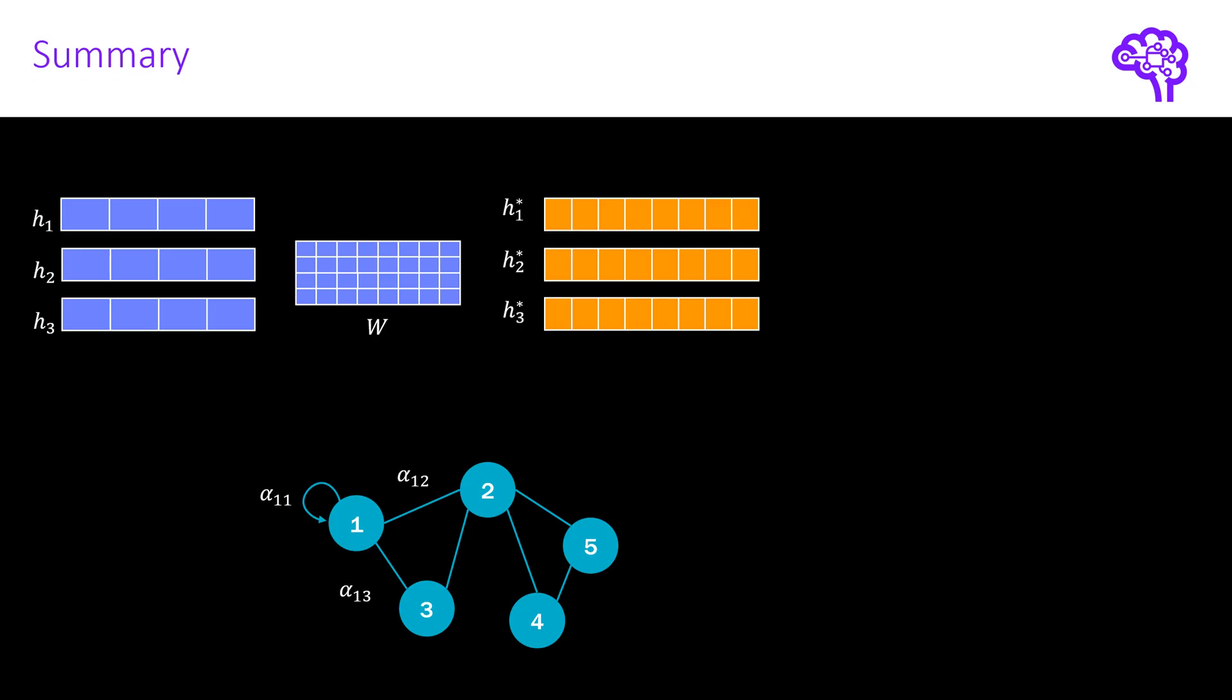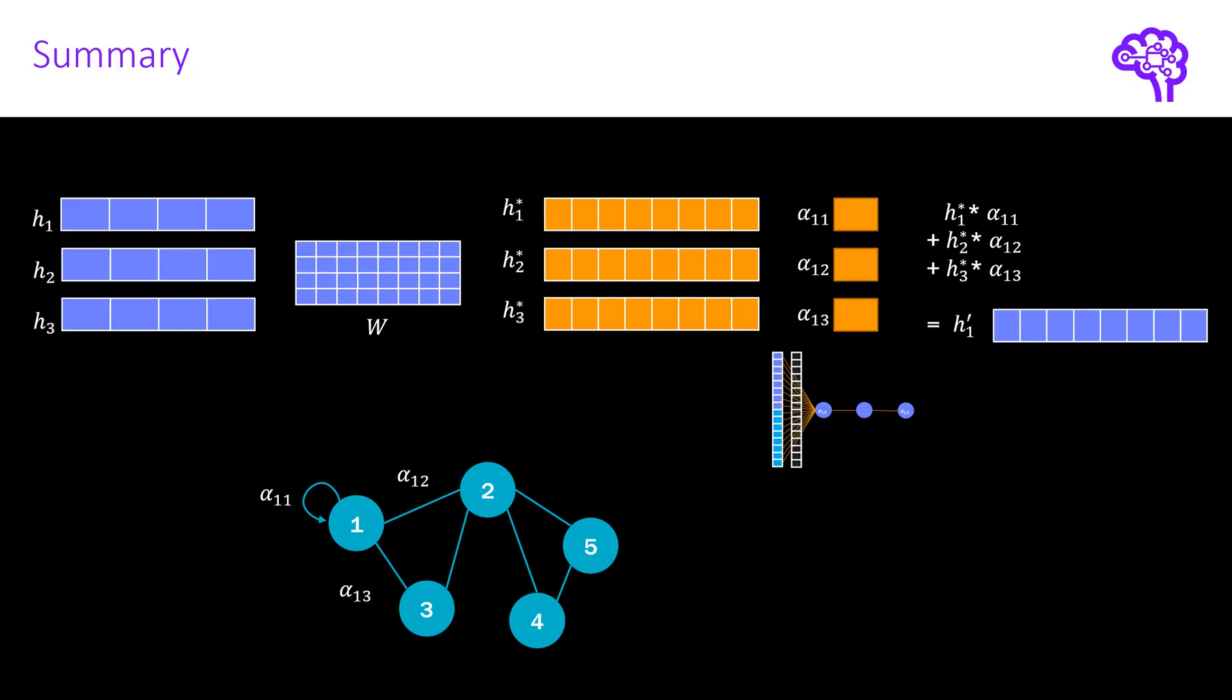What we get out are those intermediate node states which I denoted with H star previously. For each edge, we grab the two corresponding node states and pass them through this shared single layer neural network. This gives us the attention coefficients alpha. Then we sum up everything as a linear combination weighted with the calculated alphas. And then we have the final updated embedding H prime for node 1. So there are two places where the learning happens in such a graph attention layer: the transformation matrix W and the weight vector in the attention coefficient.